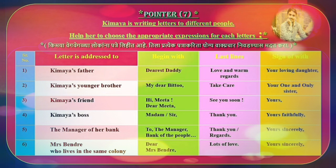Pointer seventh. Kimaya is writing letters to different people. Help her to choose the appropriate expressions for each letter. First: Kimaya's father — begin with 'Dearest Daddy', last lines: 'Love and regards.'